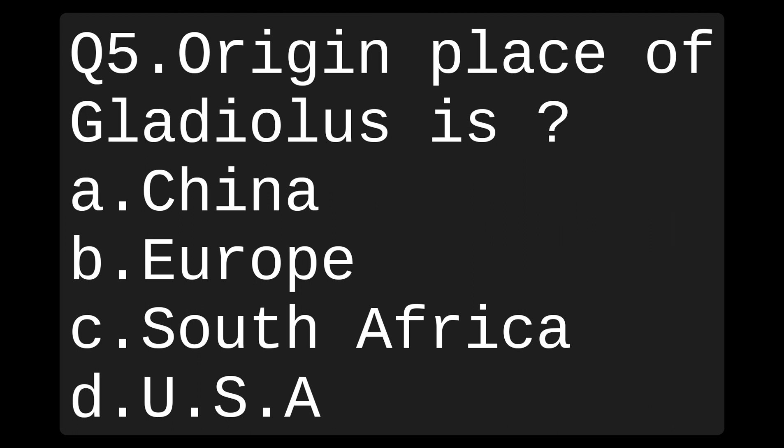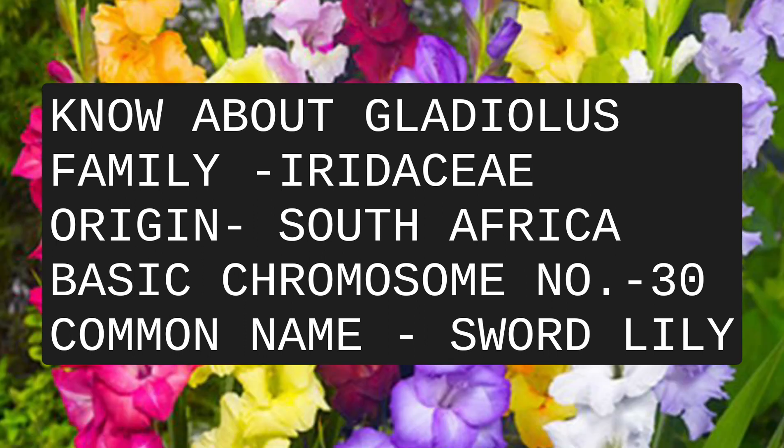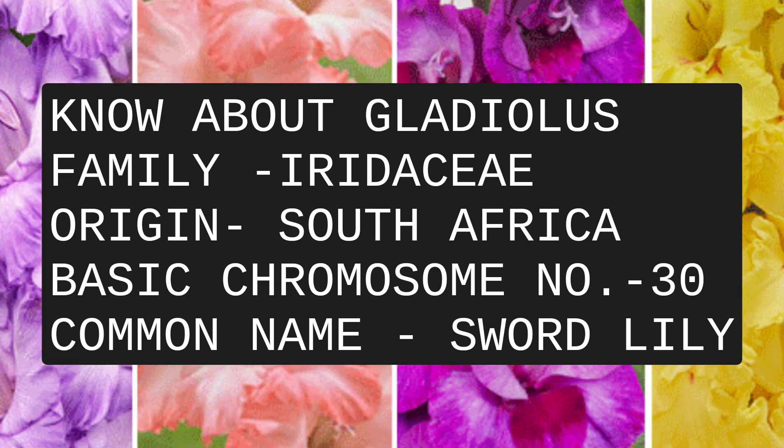Moving on to the next question: the origin place of gladiolus is? The options are China, Europe, South Africa, or USA. Here are some important facts about gladiolus: the origin of gladiolus is South Africa; it belongs to the family Iridaceae; the basic chromosome number is 30; and most importantly, gladiolus is also known as sword lily.